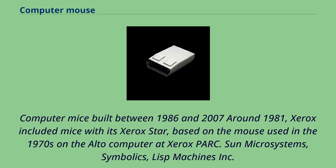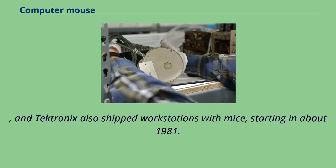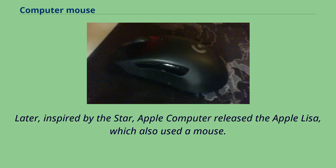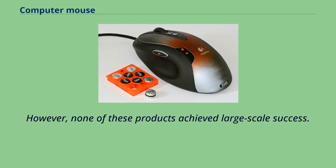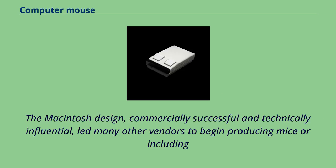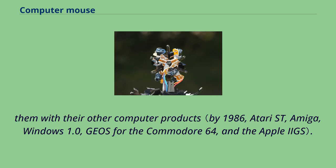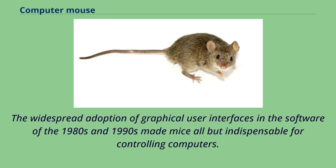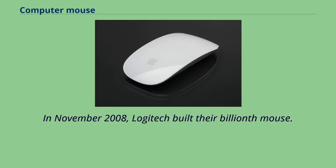Around 1981, Xerox included mice with its Xerox Star based on the mouse used in the 1970s on the Alto at Xerox PARC. Sun Microsystems, Symbolics, Lisp Machines Inc., and Tektronix also shipped workstations with mice starting around 1981. Later, inspired by the Star, Apple released the Apple Lisa, which also used a mouse. However, none of these products achieved large-scale success. Only with the release of the Apple Macintosh in 1984 did the mouse see widespread use, with its commercially successful and technically influential design leading many other vendors to produce mice. The widespread adoption of graphical user interfaces in the 1980s and 1990s made mice all but indispensable. In November 2008, Logitech built their billionth mouse.